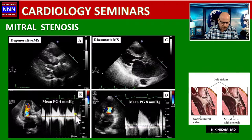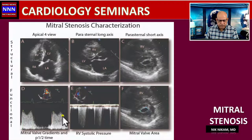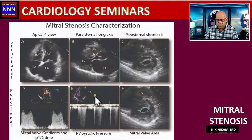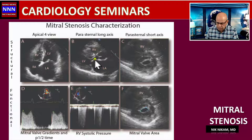This is how we measure the gradient across the mitral valve area. Mitral stenosis is assessed from various echocardiographic angles. The parasternal long-axis view can look at mitral leaflet opening, mitral annular calcification, leaflet mobility, fibrosis, and calcification.